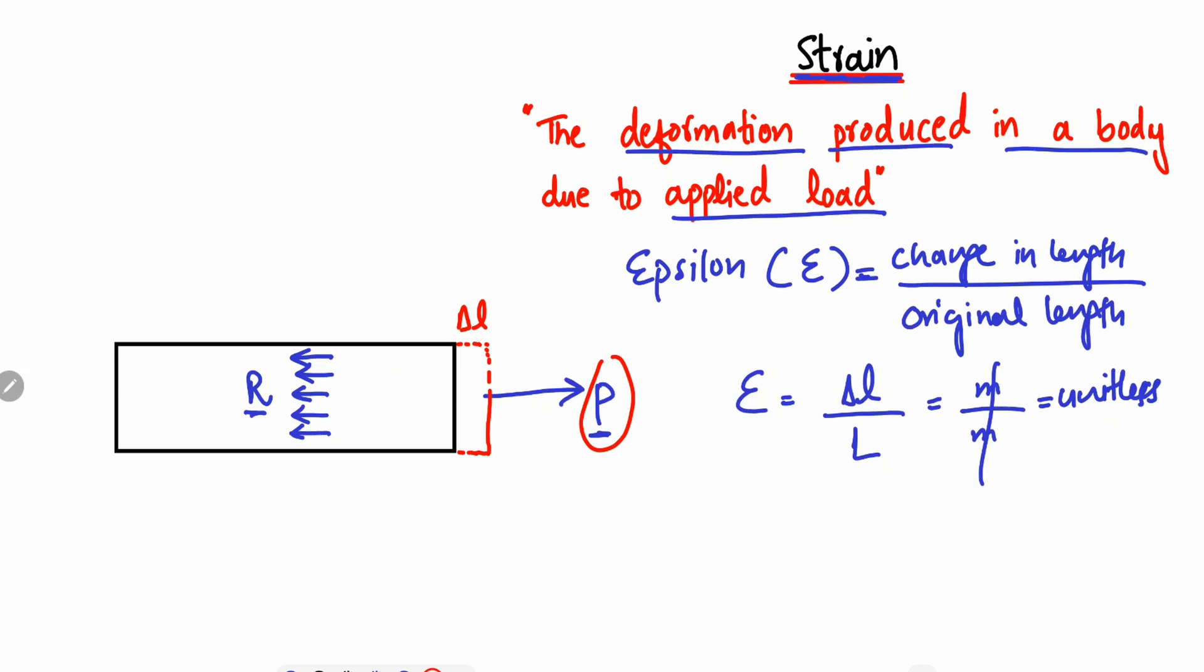This deformation depends on the material properties of the object and on the quantity of load applied. The higher the load, the more deformation occurs, also depending upon the elasticity of the material. When there is deformation due to applied load, these are changes inside the body.